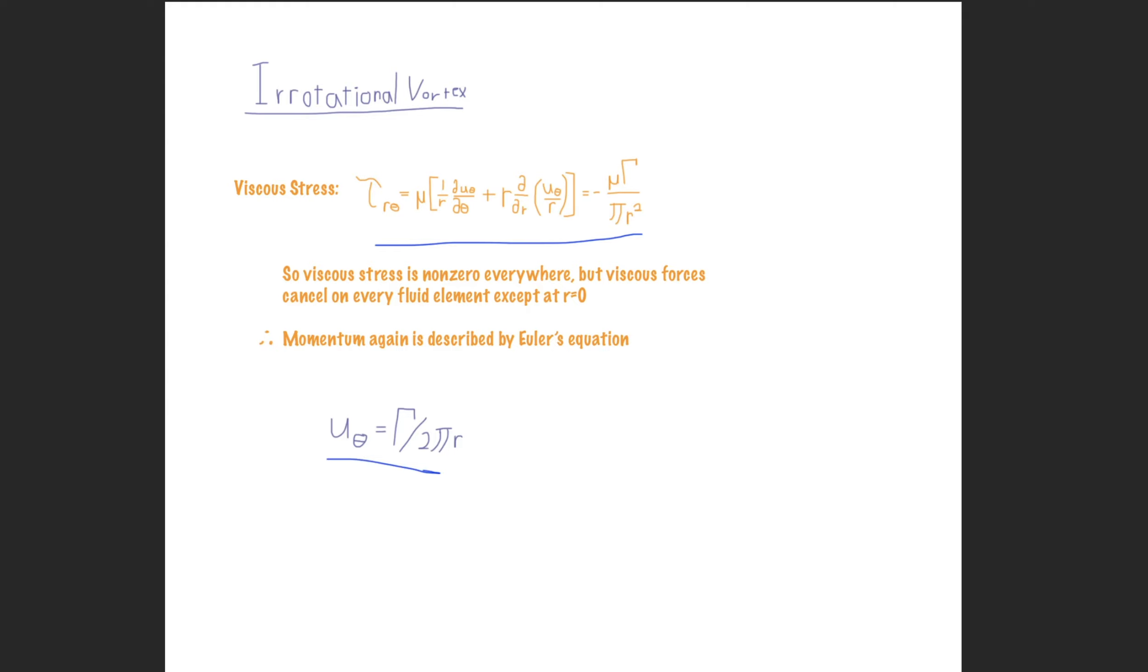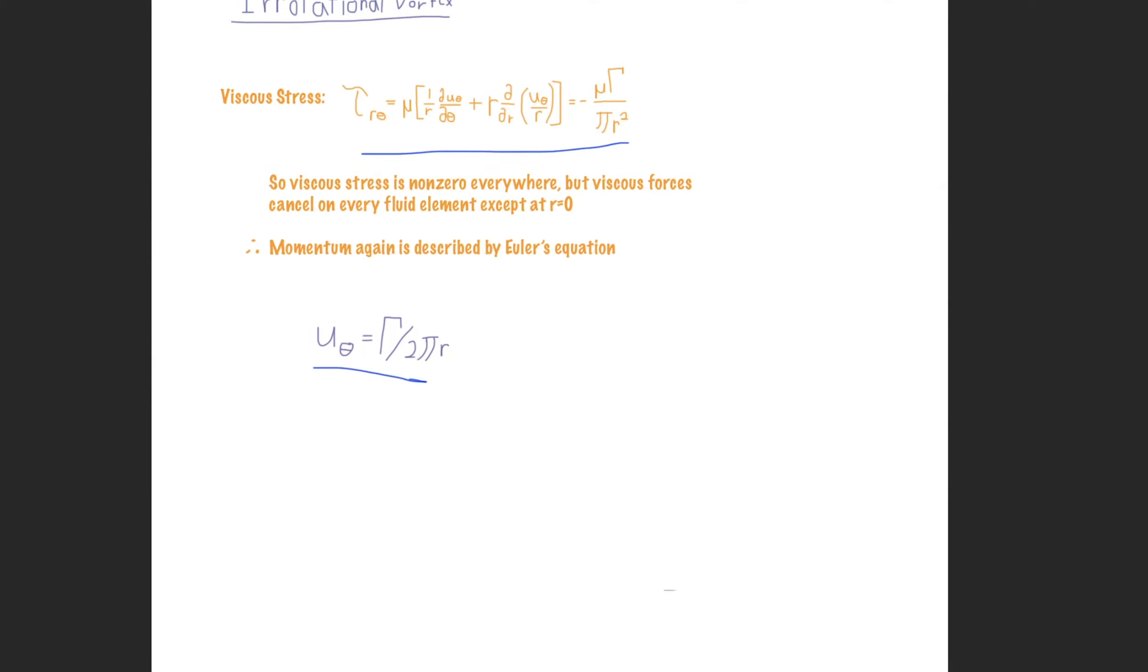And so all that we do differently from our previous solid body rotation example is we just plug this in for our angular velocity component and then do the exact same integral that we did before. So I won't go through the exact same integration again here. It's exactly the same—it's just plugging this one value in that's different.